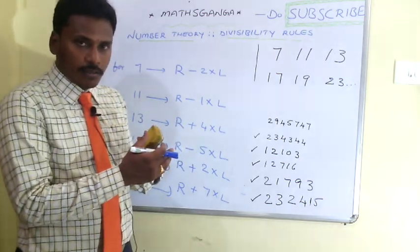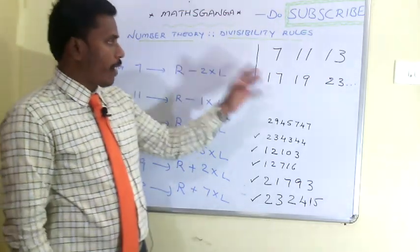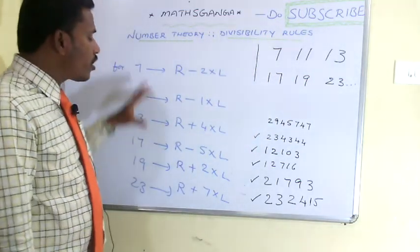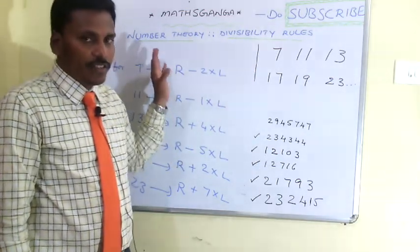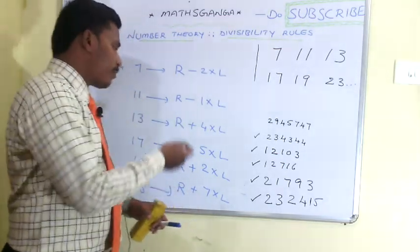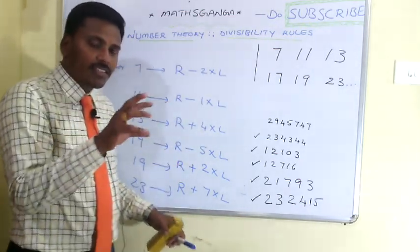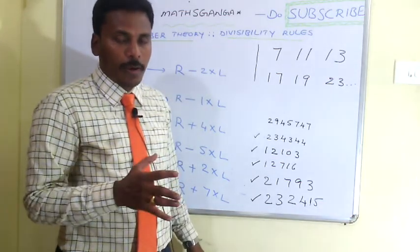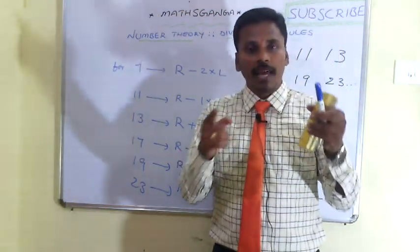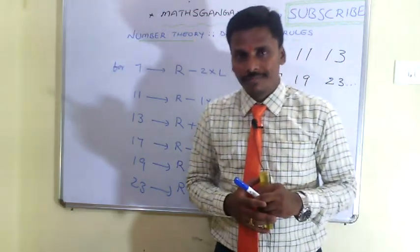With the complete class of this, you need to memorize the divisibility rules for the special primes 7, 11, 13, 17, 19, and 23. These are the divisibility rules along with the examples we discussed. Thank you for watching this video. Do subscribe, and I hope this video is helpful for your preparation. If it is helpful, like it and share it with your friends also. Thank you.